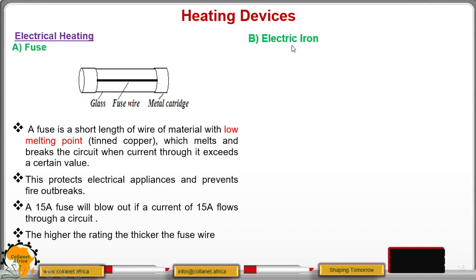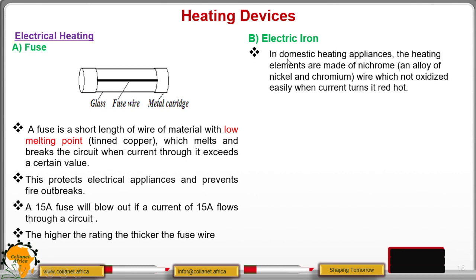Then number two, we have the electric iron. Now, in this one, this one is used for ironing your clothes at your home. And that is why initially I said this topic will help you to relate with the things that you interact with at your home. You have seen a fuse that is being used all over in any electrical device. Now, we have electric iron that you use in your daily life to iron your clothes.